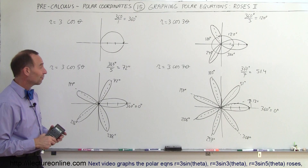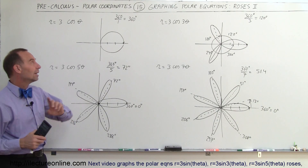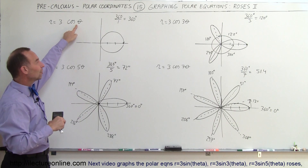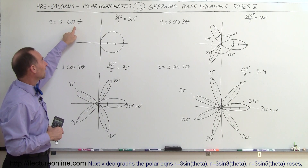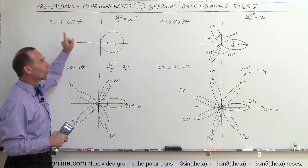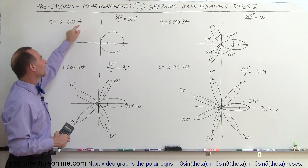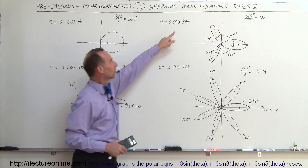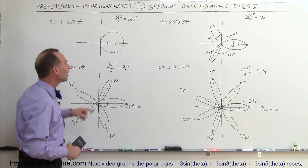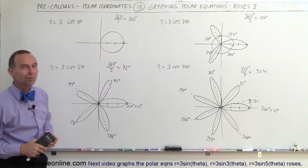So here you have a very interesting pattern. Notice when the number in front of the angle is even, as in the previous video, you have twice as many leaves as the number. But if it's odd, you only have the same number of leaves as the number in front of theta: 1 leaf, 3 leaves, 5 leaves, and 7 leaves. And that's how we graph that.